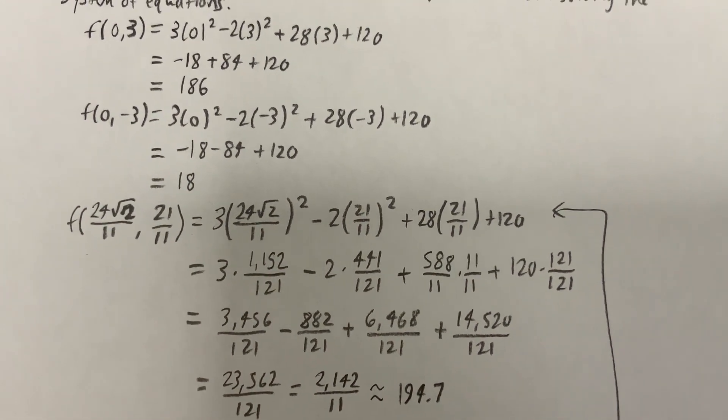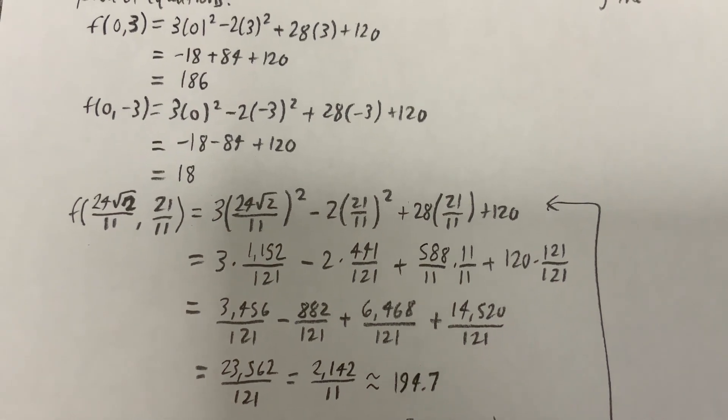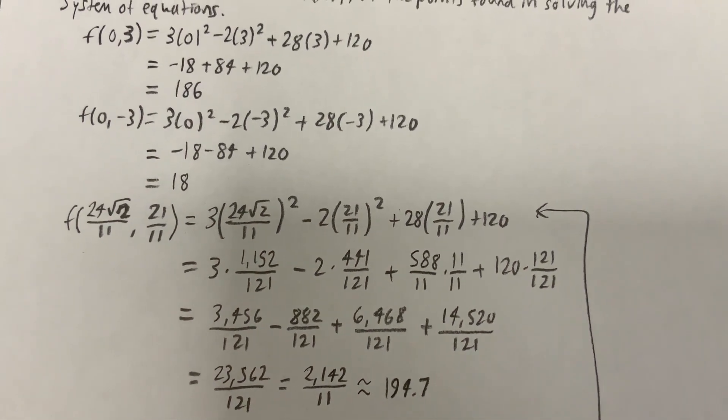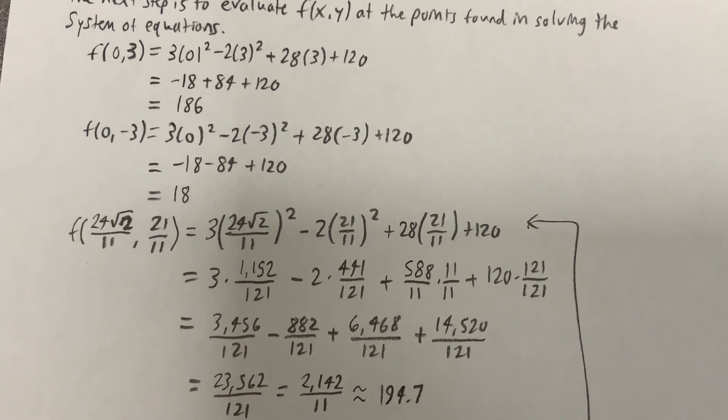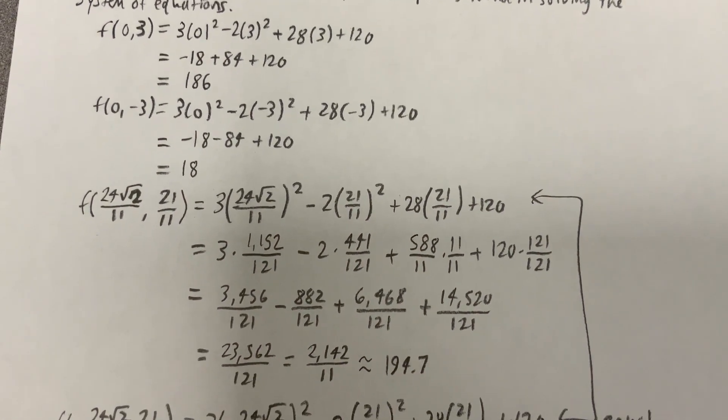That will simplify down to 2,142 divided by 11, which is about 194 over 7, or 194.7, which is ever so slightly bigger than the 186.